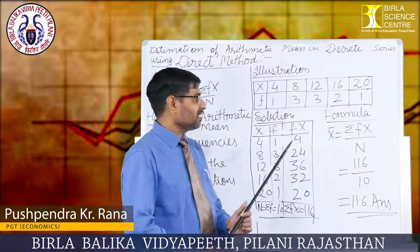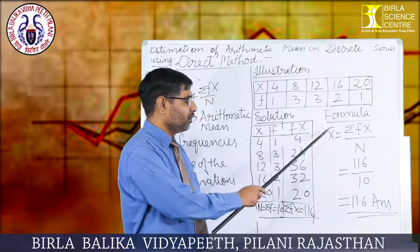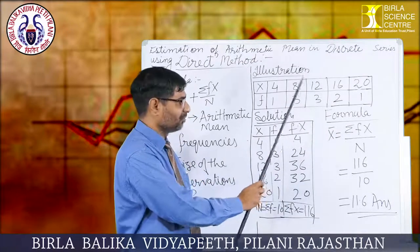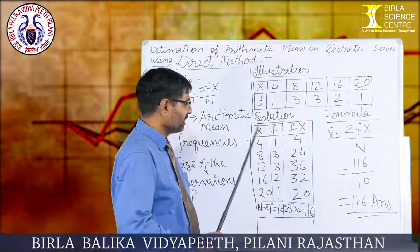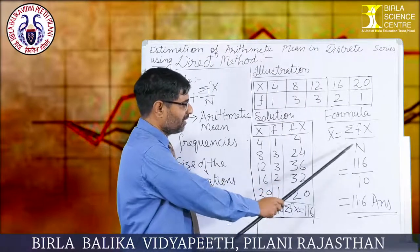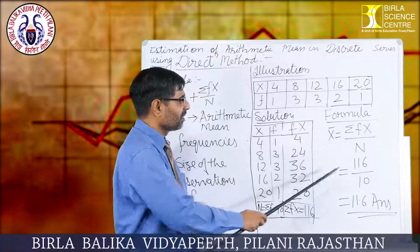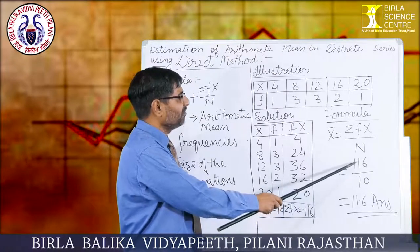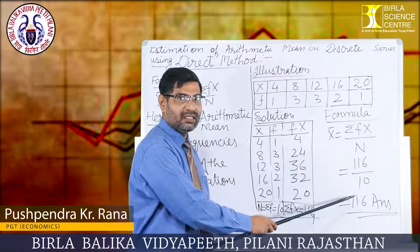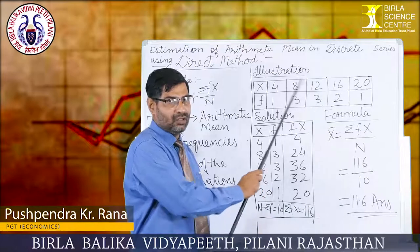Now let us put the values in the formula. The formula is x̄ = Σfx / n. Substituting the values, Σfx is 116 and n, the sum total of frequencies, is 10. When we divide 116 by 10, we get 11.6, which is the arithmetic mean for this question.